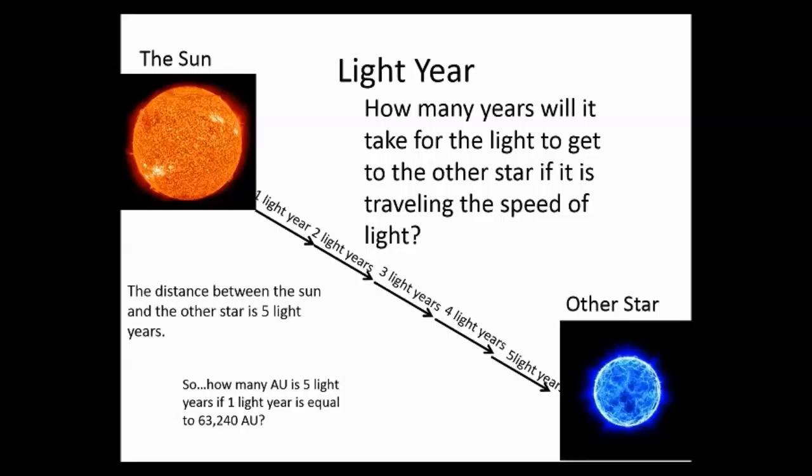So how many AU is five light years if one light year is equal to 63,240 AU? Well, you would just take those two numbers and multiply them together. You would take five times 63,240. Now go ahead and do your practice problem in your notes.